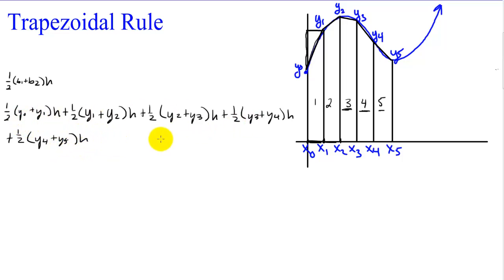We can factor out the one halves and the h's. So we have h over 2 times, and what we have left is y sub 0 plus y sub 1 plus y sub 1 plus y sub 2 plus y sub 2 plus y sub 3 plus y sub 3 plus y sub 4 and finally plus y sub 4. That's what we'd have left when we factored out the one halves and the h's.